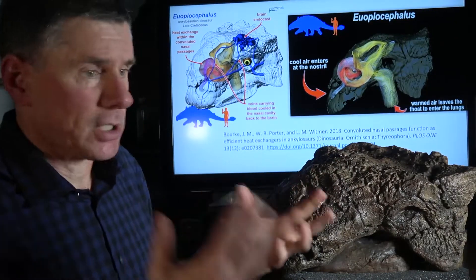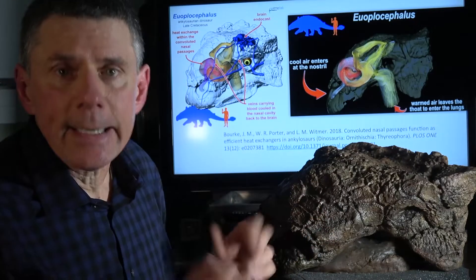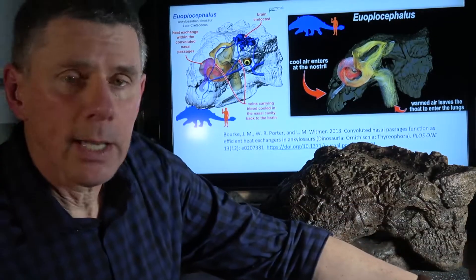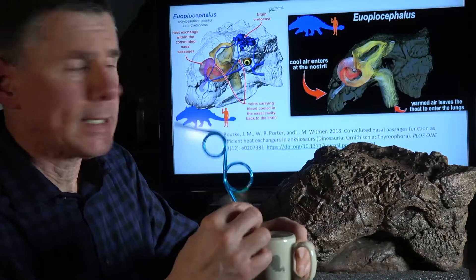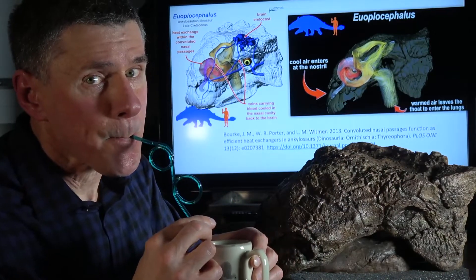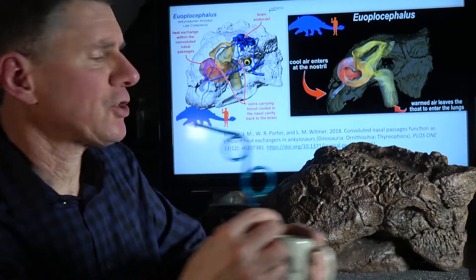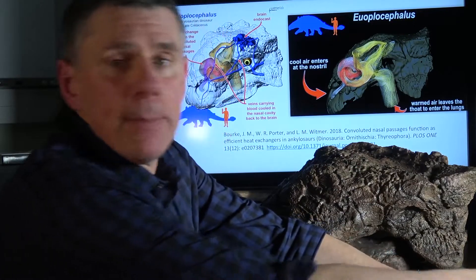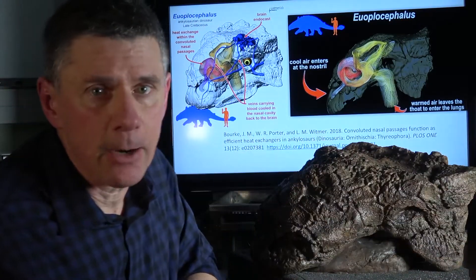When Ryan Ridgely and I first discovered this more than a decade ago and published on it in 2008, we actually referred to this thing as the crazy straw nasal cavity because it makes all of these twists and turns as it goes through the snout.